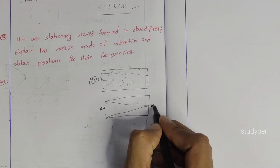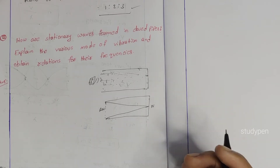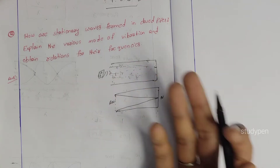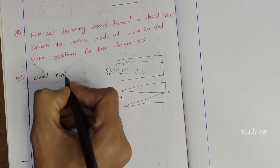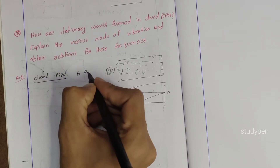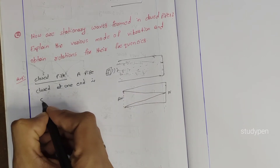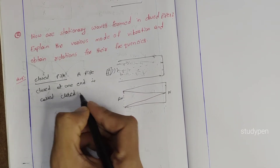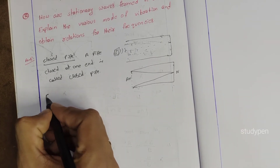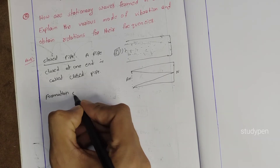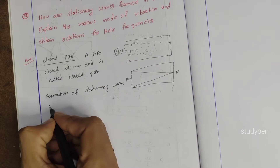Here you can see the amplitude. The amplitude is zero at the node, and amplitude is maximum at the antinode. Let's talk about the theory of the closed pipe. Closed pipe definition: a pipe contained in — that is, closed at one end — is called a closed pipe. Next: formation of stationary waves in a closed pipe.